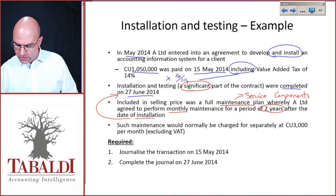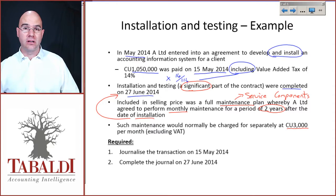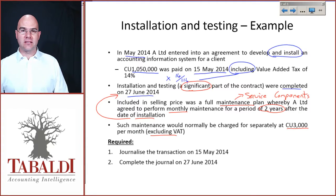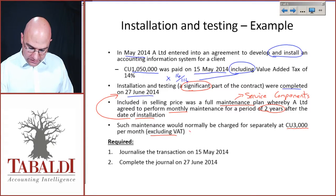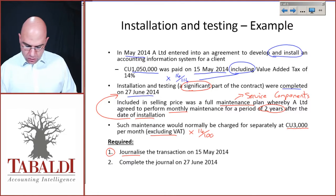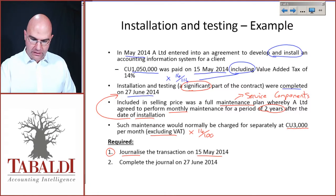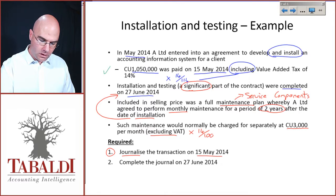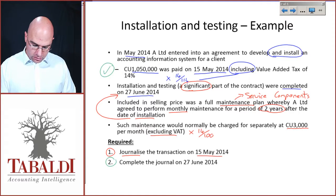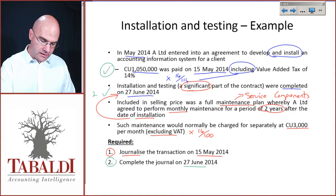Such maintenance would normally be charged for separately at $3,000 currency units — could be Rands, Dollars, Euros, Pounds, whatever — and this $3,000 is excluding VAT, so the VAT would be calculated at 14/100. There are two requirements: journal the transaction on the 15th of May when the transaction is first entered into, and then the journal on the 27th of June.